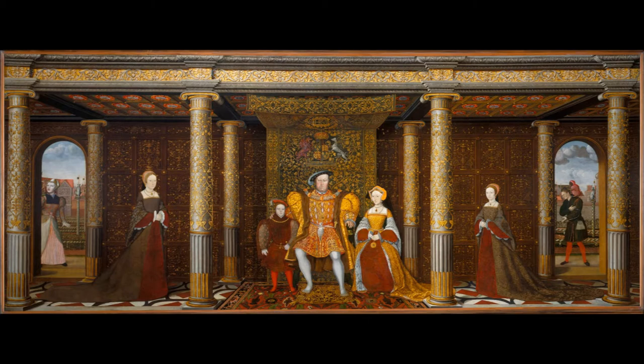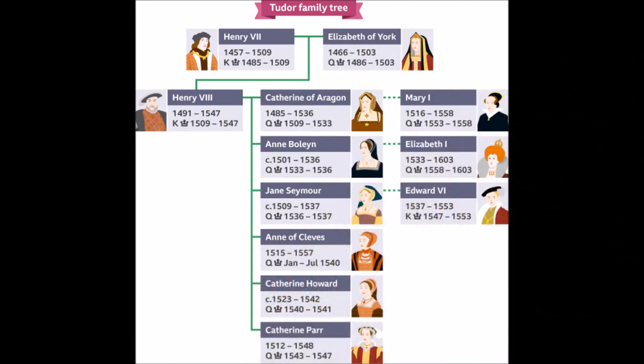But this is more than a family portrait. It also symbolises the political settlement by which Henry hoped to preserve and prolong his legacy. To secure the Tudor succession, he decided that all three of his children would be named as his heirs. His son Edward would succeed him. But if Edward died childless, the throne would pass to his elder daughter Mary. If she had no heir, then her half-sister Elizabeth would become queen.